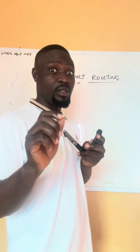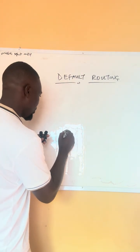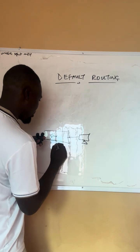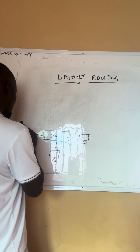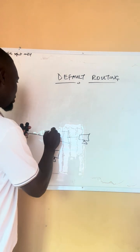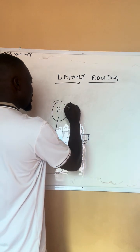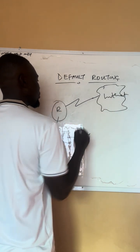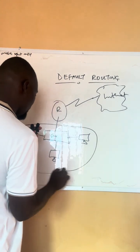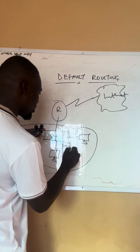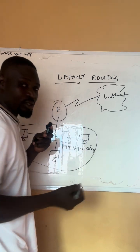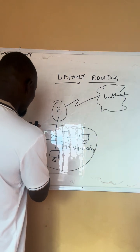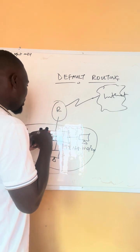Let me give you an application of where default routing is normally used. Let's say this is an organization whereby they have their switch, with systems connected to it. This switch is connected to the router, and this router is the one facing the internet. Now let's say these people are using private IP addresses for all systems inside the organization.